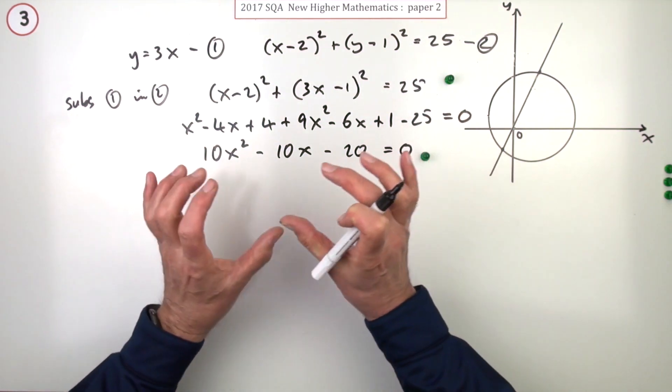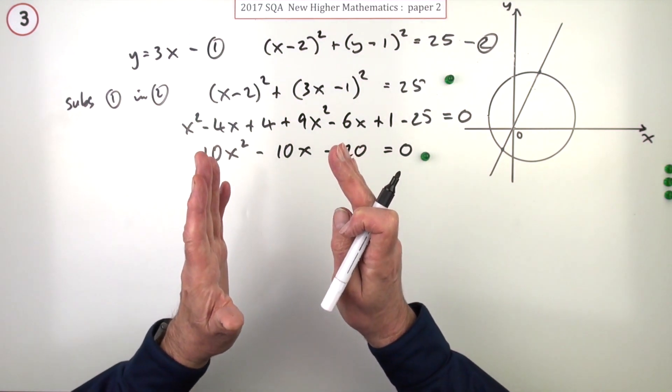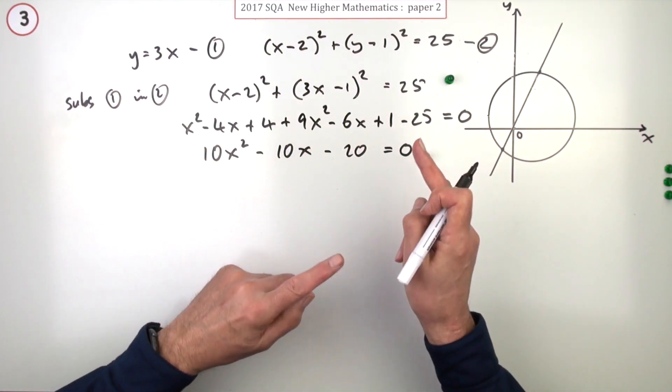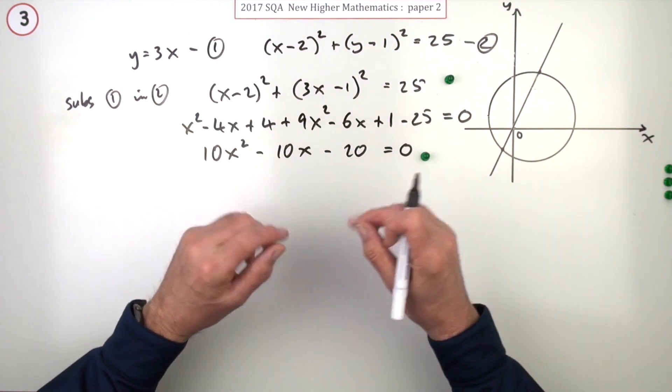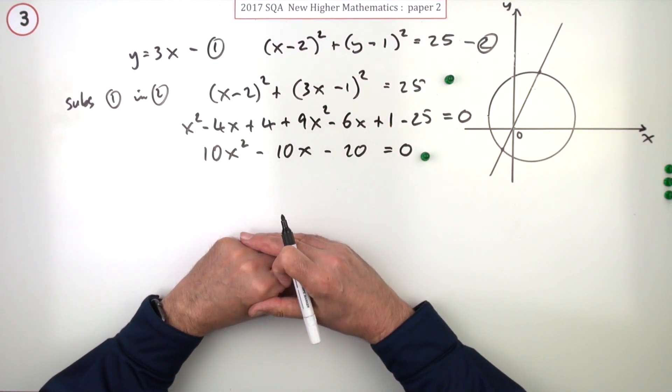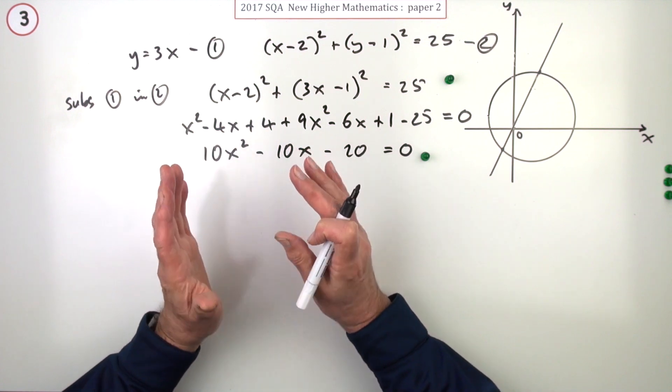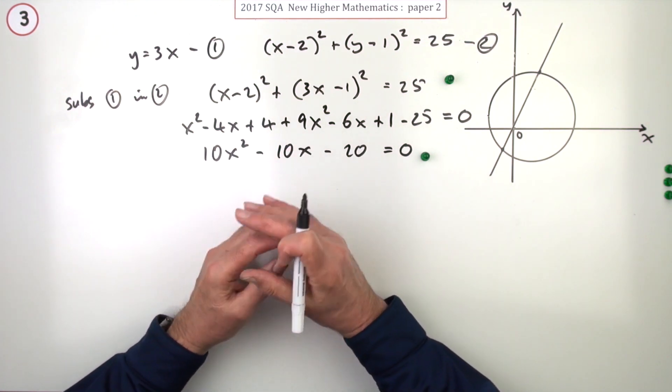The way you solve this sort of equation is you factorize it. If factors multiply to give zero, one of the factors must be zero.